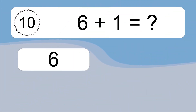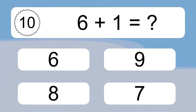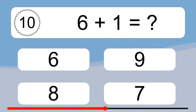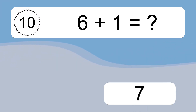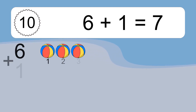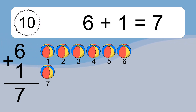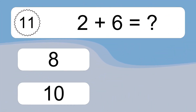6 plus 1 equals what? 6 plus 1 equals 7. Let's count it: 1, 2, 3, 4, 5, 6, 7.